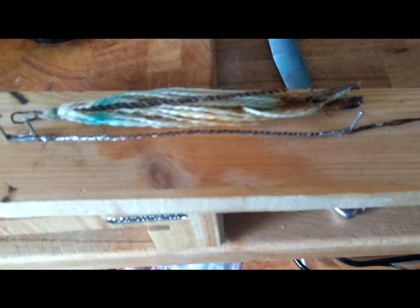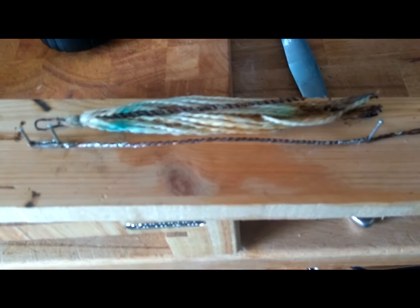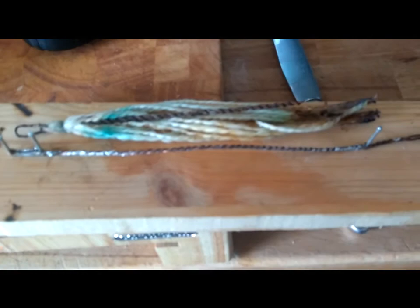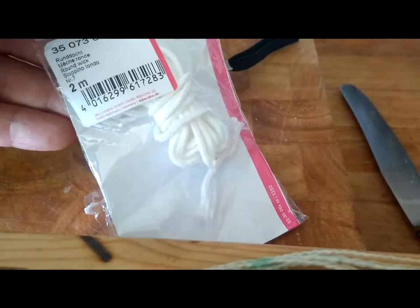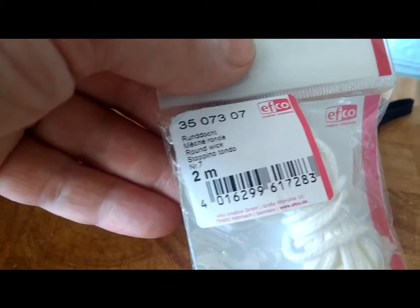What I'm going to use to replace this wick, which I think seems to be cotton although it could be glass fiber, I've tried melting it and it does sort of burn a bit. But I'm replacing it with a length of this wick here. This is 2 meters, a 2 meter wick, wick number 7.